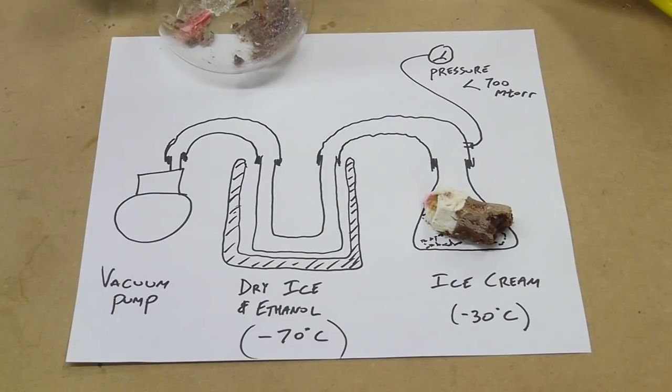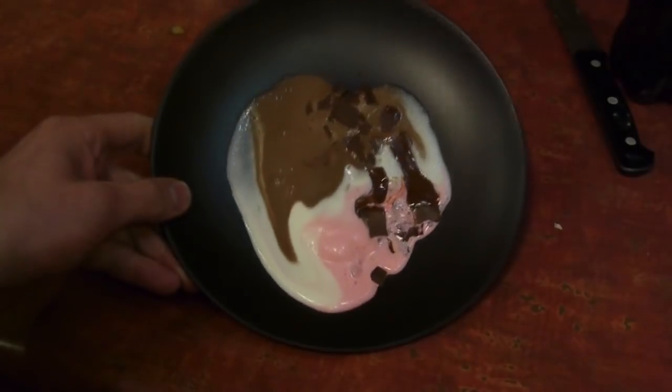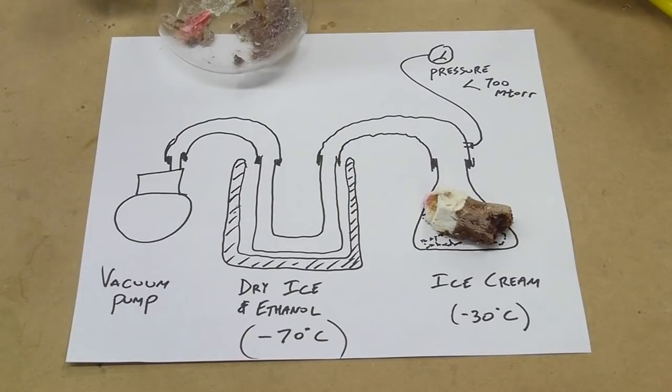If you took some ice cream out of the freezer and just let it sit on the counter, eventually it would melt into a puddle, and if you kept waiting eventually all the water would evaporate away and you'd be left with sort of a sludge. The sludge doesn't resemble the original ice cream because the structure is missing.